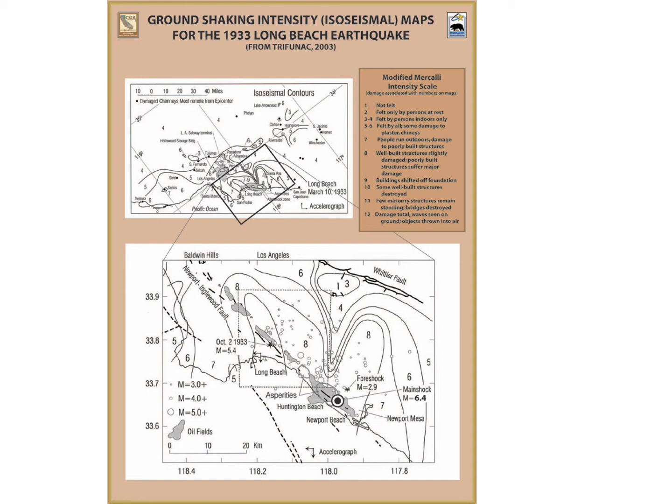The smaller map shows that the Long Beach area suffered damage in the 6 to 9 scale, with 6 indicating earthquake felt by all with some damage to plaster, 7 indicating people run outdoors with damage to poorly built structures, 8 indicating well-built structures slightly damaged and poorly built structures suffering major damage, and 9 indicating buildings shifting off foundations. The larger map also indicates the area experienced a 5.4 earthquake, as measured on the recently developed Richter scale, about seven months later on October 2nd, 1933.